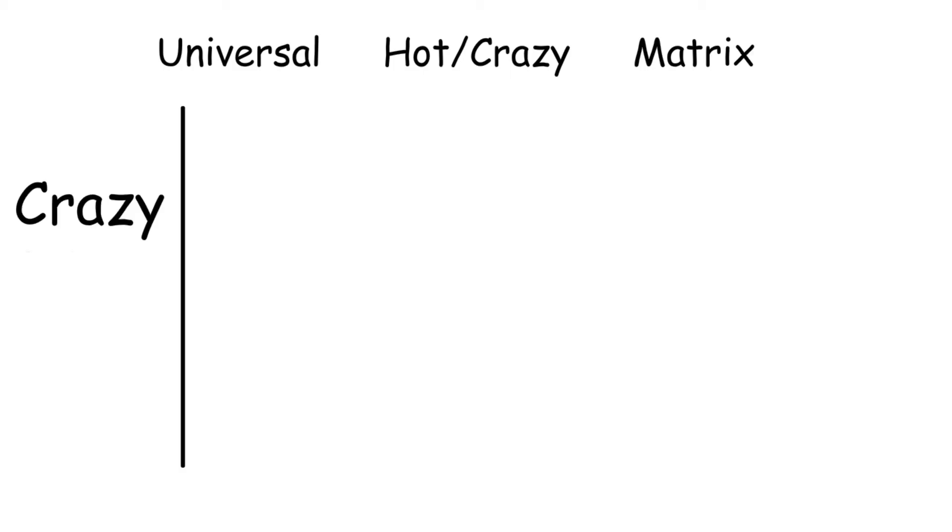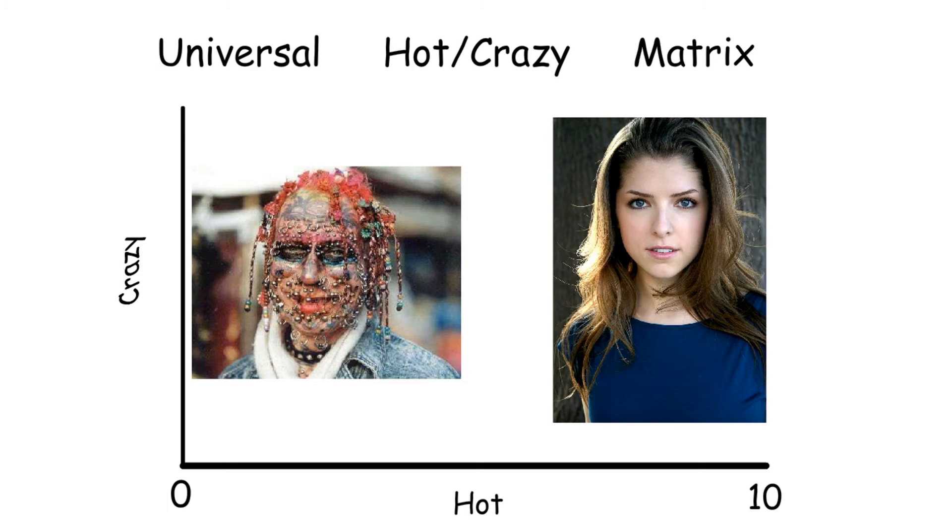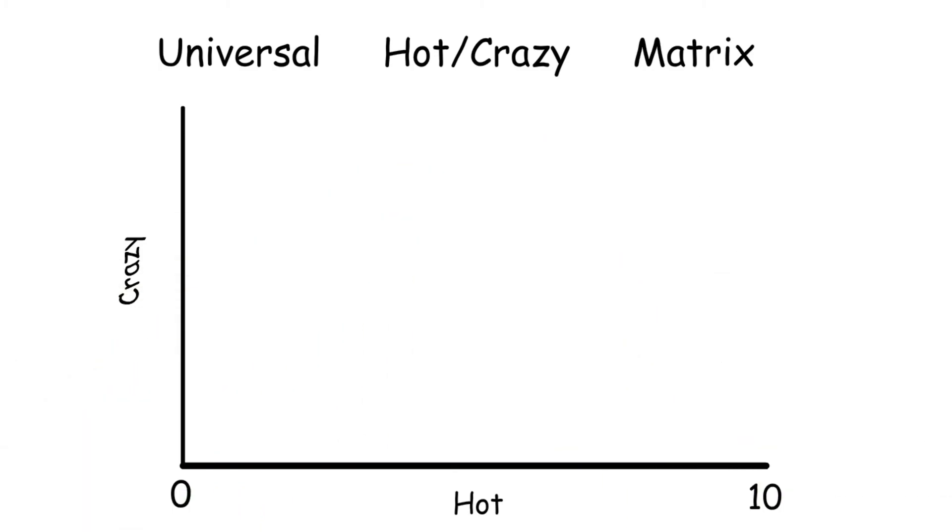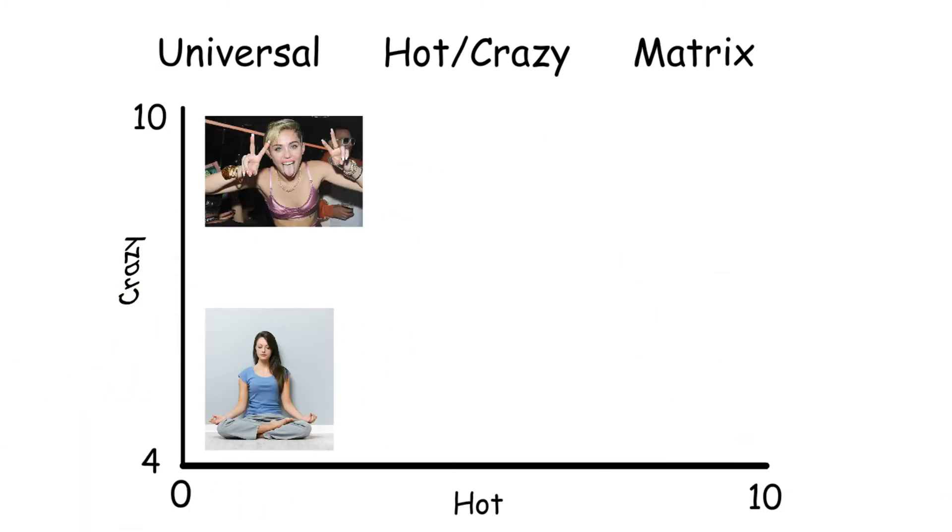You have your crazy axis and your hot axis. Hot is measured from 0 to 10, as usual. We're all familiar with that. Crazy is measured from 4 to 10 because there's no such thing as a woman who's not at least a 4 crazy.